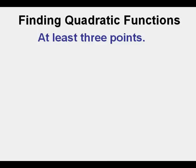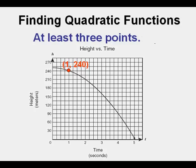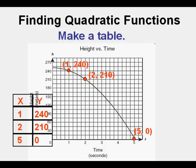And so from this graph, we're going to find three points, identify them. First we have 1,240. The second point is 2,210. And the third point is 5,0. Now the next step is that we're going to place these x and y coordinate values in table form. The x values under the x column, the y values under the y column.